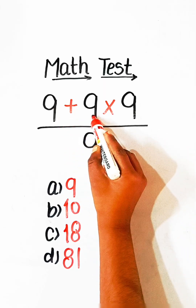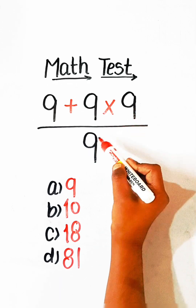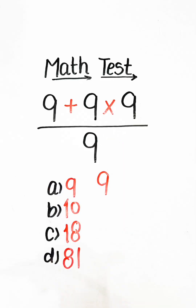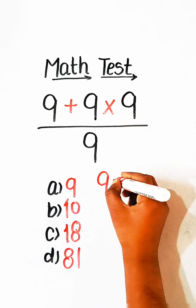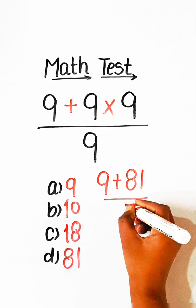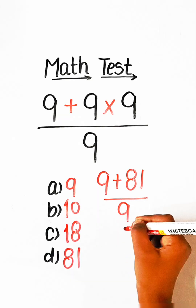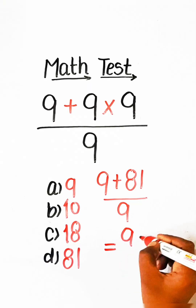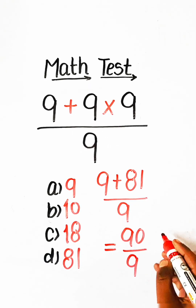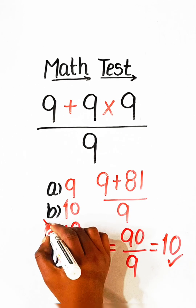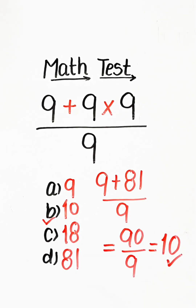Here we have 9 plus 9 multiply by 9, so we will solve the upper part first. We multiply first: 9 nines are 81, plus upon 9. Then 9 plus 81 is 90, upon 9. So we have the answer 10, and we will go with Option B — 10 is the correct answer.